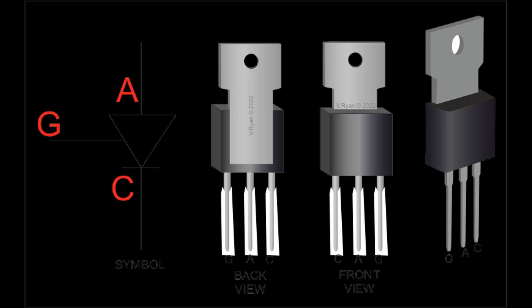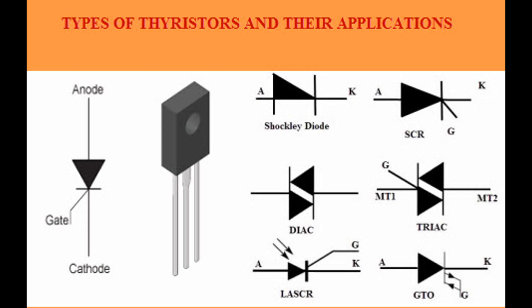Detailed operation process — Forward blocking mode: the anode is positive relative to the cathode; J1 and J3 are forward biased; J2 is reverse biased; no current flows through the device. Triggering the thyristor: a positive voltage is applied to the gate terminal relative to the cathode, causing a small gate current to flow, which initiates the breakdown of the reverse-biased J2 junction. Electrons from the N-type layer and holes from the P-type layer are injected into the J2 junction, causing it to become forward biased.